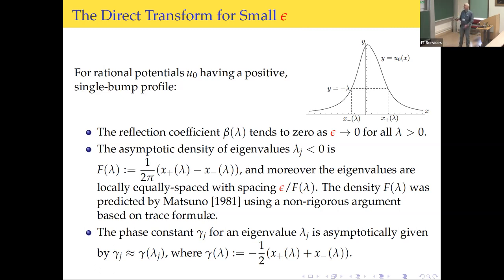The phase constant gamma_j for an eigenvalue lambda_j is given by an approximate formula: you evaluate the average of the turning points with a minus sign at the eigenvalue, and that gives you the approximation of the actual phase constant needed for the inverse algorithm. This comes from the rational structure enabling contour integration and residue calculations.